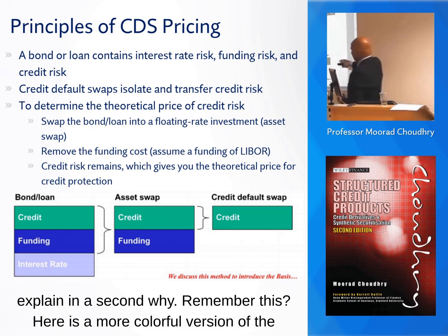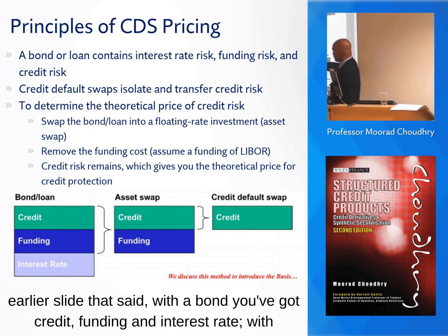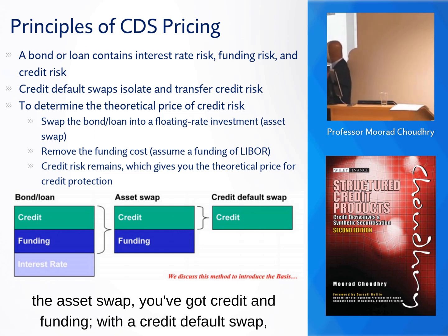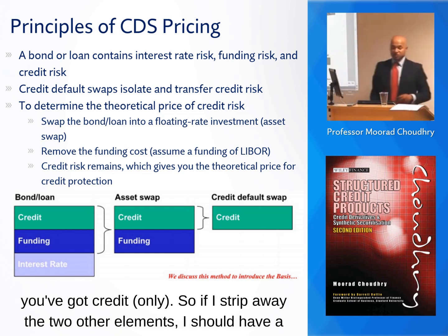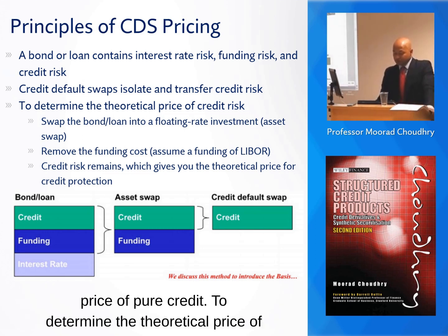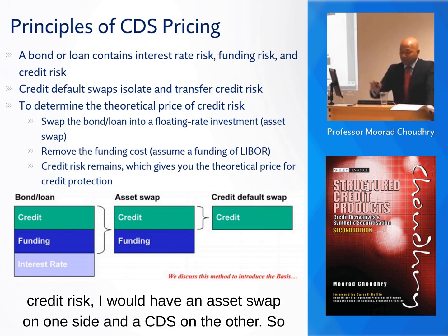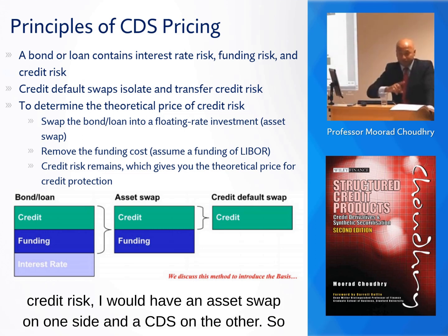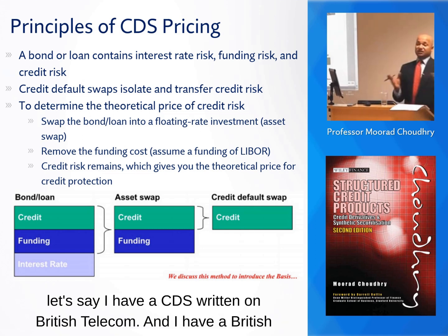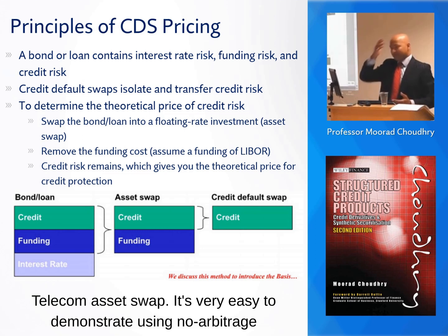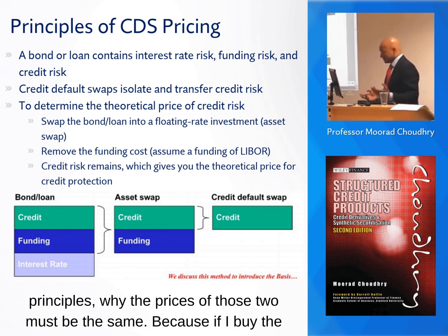Remember, this is a more colourful version of the earlier slide: with a bond you've got credit, funding, and interest rate. With the asset swap, you've got credit and funding. With the credit default swap, you've got credit only. So if I strip away the other elements, I should have a price of pure credit. Let's say I have a CDS written on British Telecom and I have a British Telecom asset swap — using no-arbitrage principles, the prices of those two must be the same.